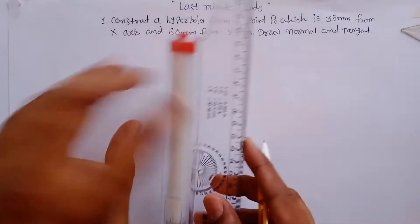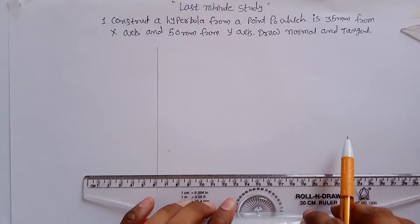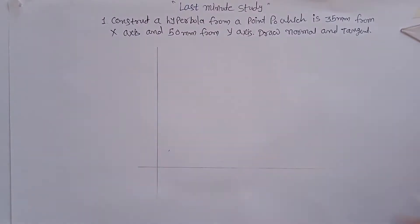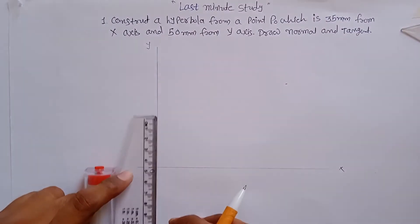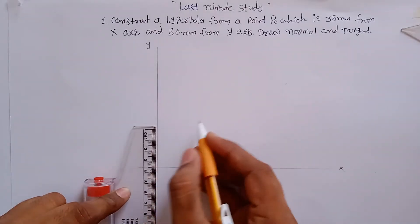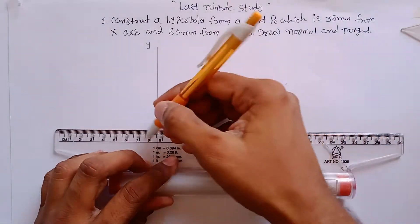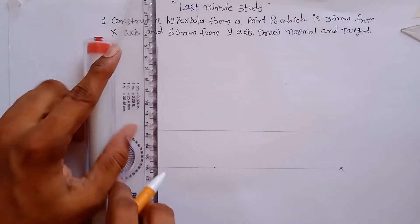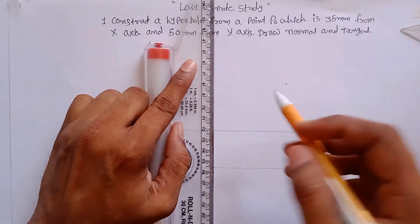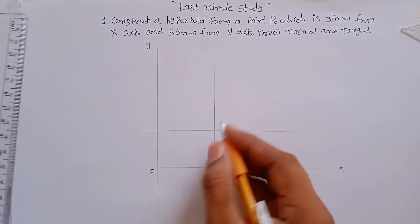Point P0 is 35mm from the x-axis and 50mm from the y-axis. First, construct the x-axis and y-axis so these two lines are perpendicular to each other. The origin is where they meet. Measure 35mm from the x-axis and draw a parallel line, then 50mm from the y-axis. This intersection point is P0.